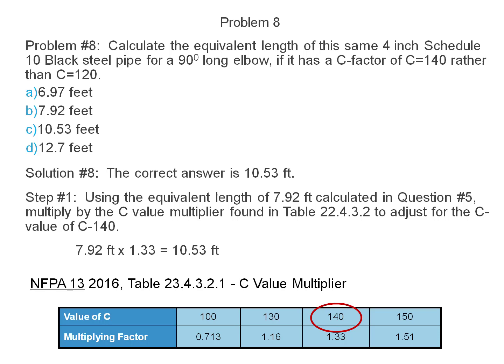Problem 8 continued. Using C equals 140 rather than C equals 120, is our answer A, 6.97 feet, B, 7.92 feet, C, 10.53 feet, or D, 12.7? The answer for problem number 8 is 10.53 feet.